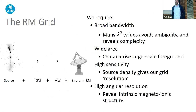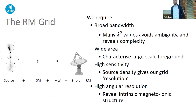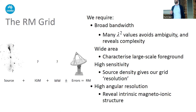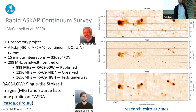To perform this rotation measure grid experiment we want broad bandwidth — as many values of wavelength squared as possible. We want to cover wide areas: some features like the Milky Way cover tens of degrees or the entire sky. We also want high sensitivity to bump up the number of polarized sources per square degree, allowing us to study smaller angular scales — going from studying the Milky Way as a whole down to individual galaxies or clusters. And we want high intrinsic angular resolution to study individual objects like radio galaxies.